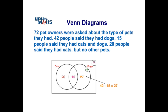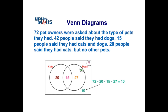We also know that there are 72 pet owners in total, and some of those may not own cats or dogs. To find the number outside the circles but inside the Venn diagram, we take the total of 72 and subtract the numbers inside the circles — that's the 20, 15, and 27. When we subtract those numbers we get 10, so there are 10 people that are pet owners but do not own a cat or a dog.